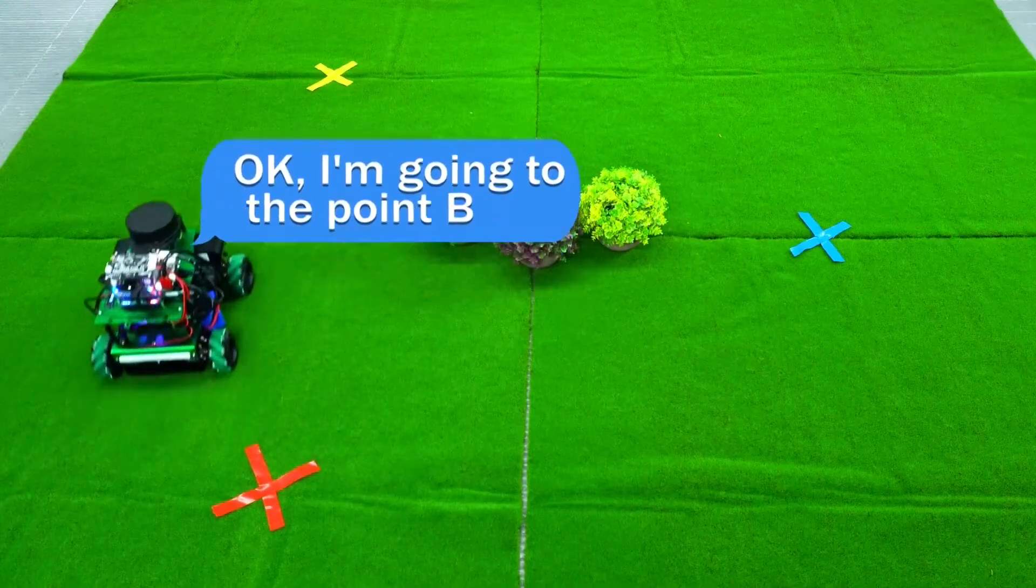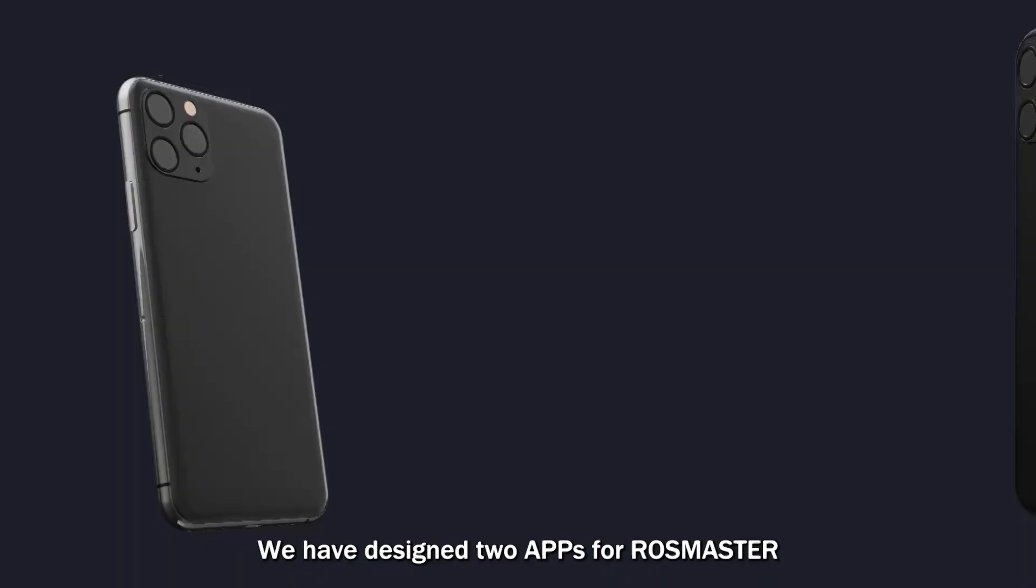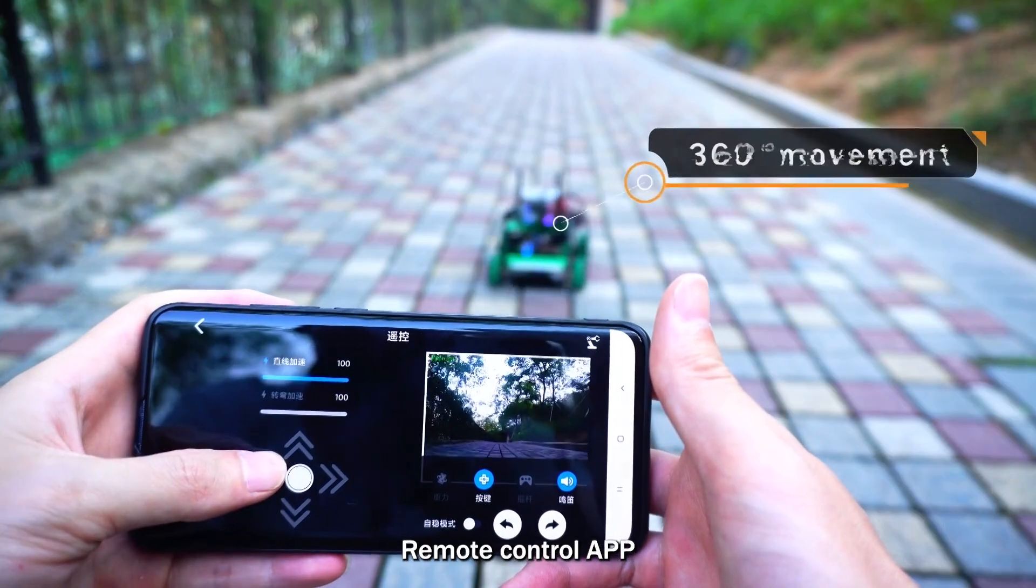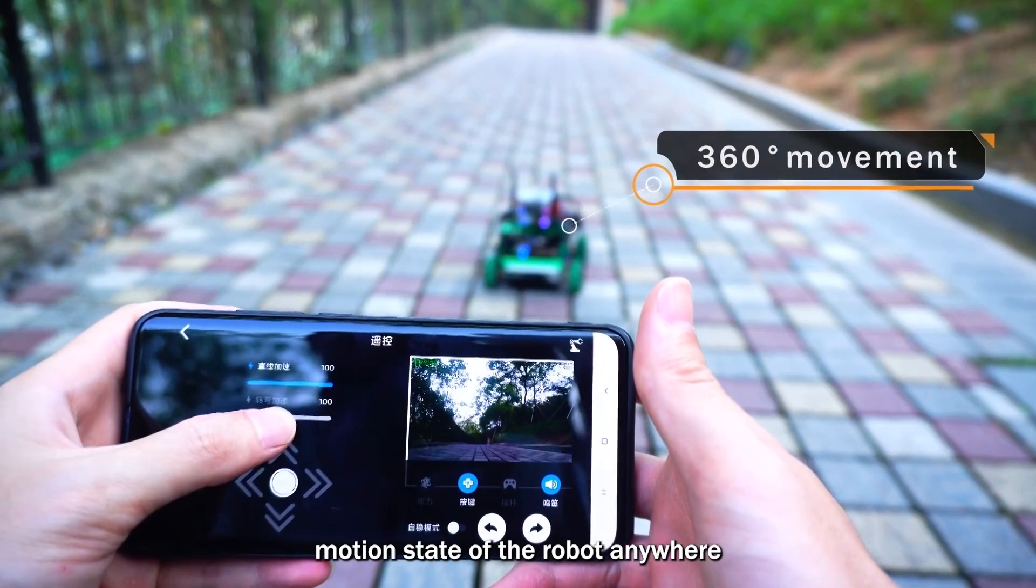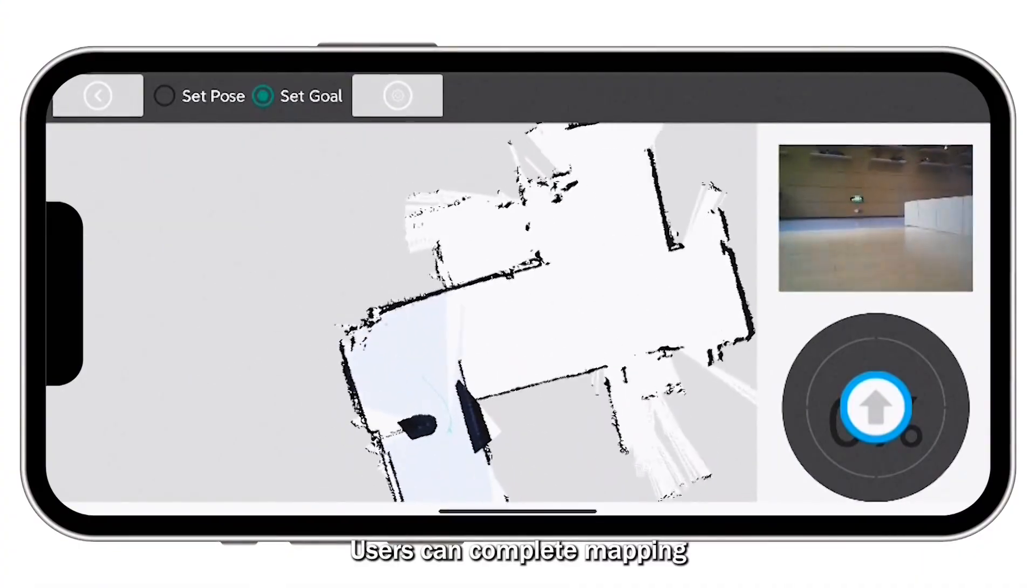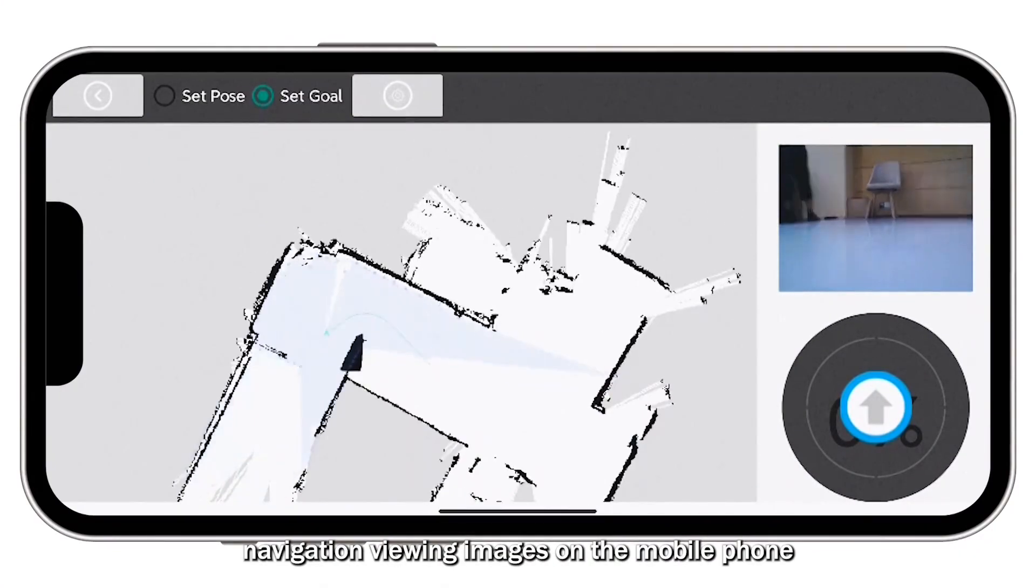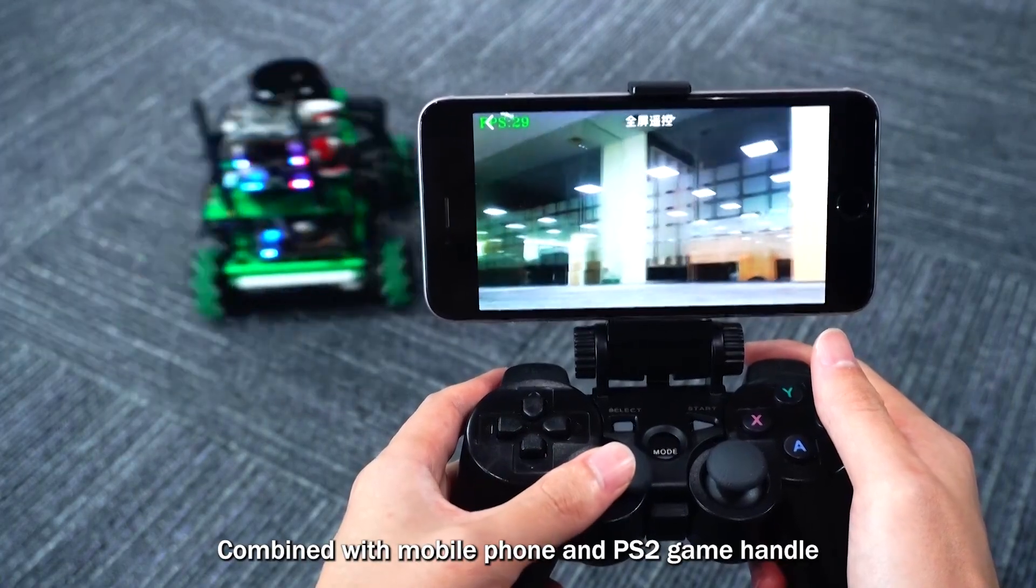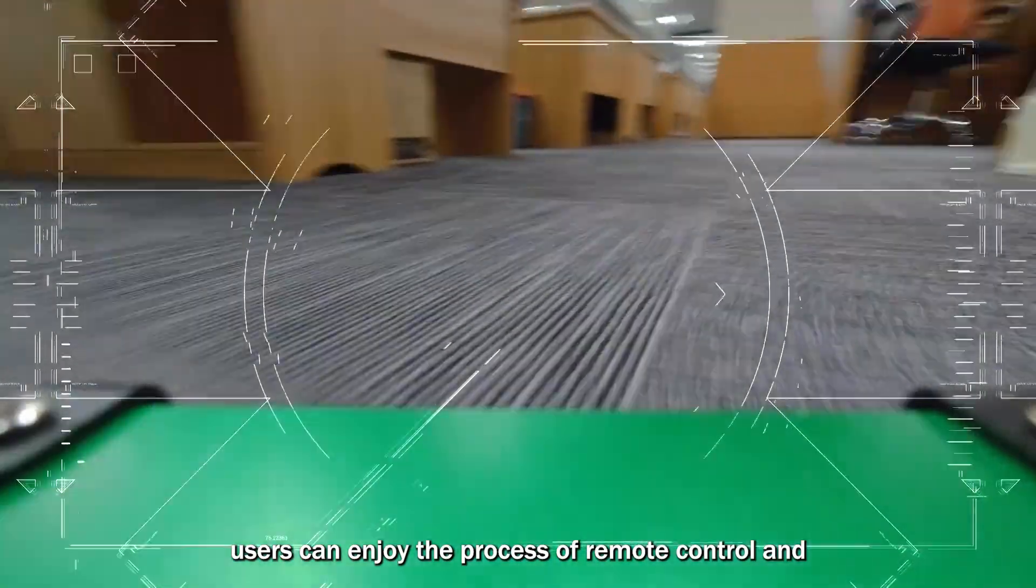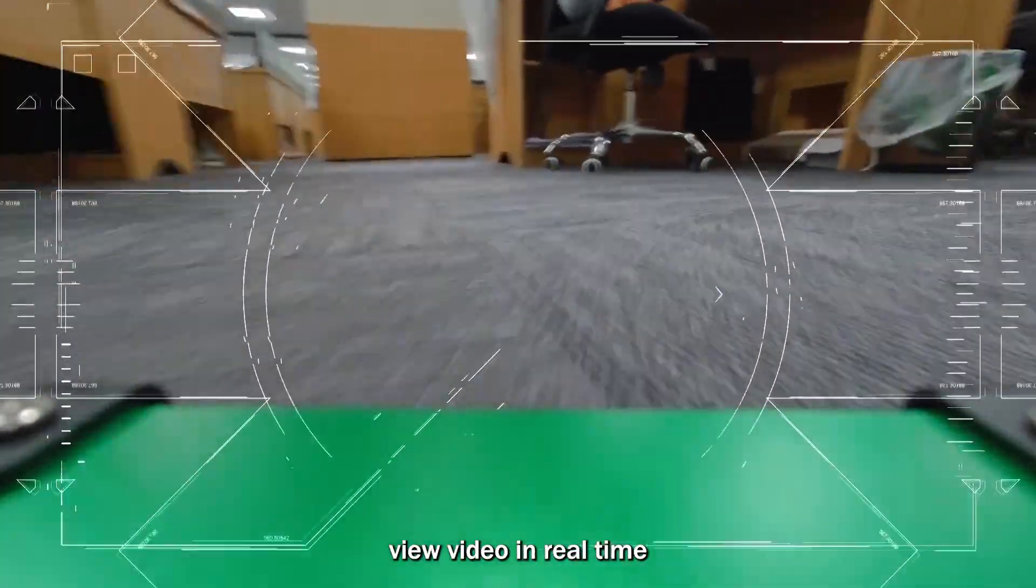We have designed two apps for Rosmaster. Remote control app allows users to control the motion state of the robot anywhere. RosRoboter app allows users to complete mapping, navigation, and viewing images on the mobile phone. Combined with mobile phone and PS2 game handle, users can enjoy the process of remote control and view video in real time.